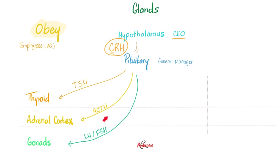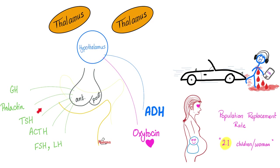When the adrenal cortex sees ACTH, it's going to secrete its hormones. Most of your hormones come from the anterior pituitary. Only two are released from the posterior: ADH and oxytocin. Who made them? The hypothalamus. The posterior pituitary does not make anything — it just stores these two hormones and then dumps them into the bloodstream.